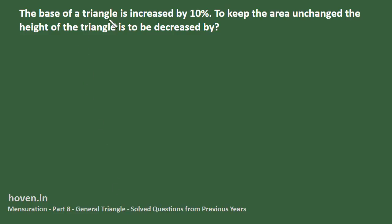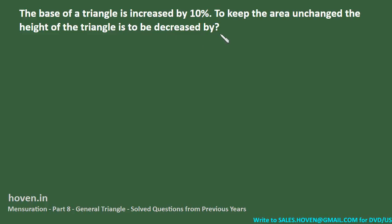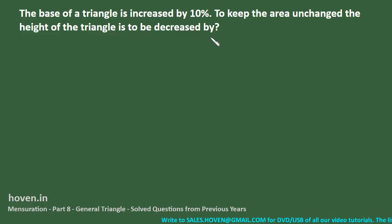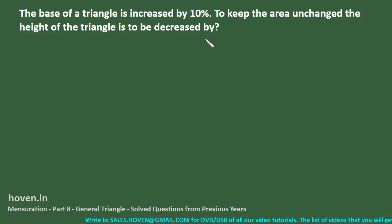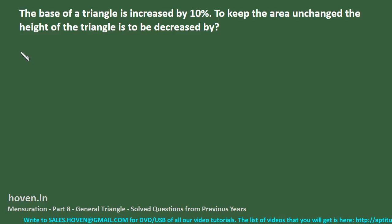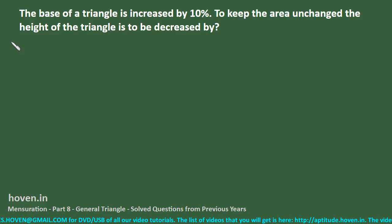The base of a triangle is increased by 10%. To keep the area unchanged, the height of the triangle is to be decreased by how much? We have to find out the percentage decrease in height so that the area of the triangle remains the same. This question can be solved by two methods.